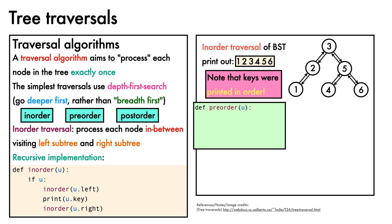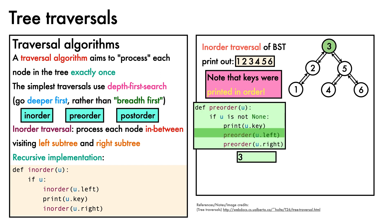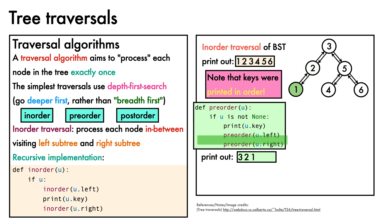Pre-order traversal is closely related. As before, we start with a check that the node is not none. This time, however, we process the node by first printing its key, then we recurse into its left child, and then its right child. If we re-execute the traversal, we see that we still visit the nodes in depth first order, but because we are processing the key before recursing, the printout is different.